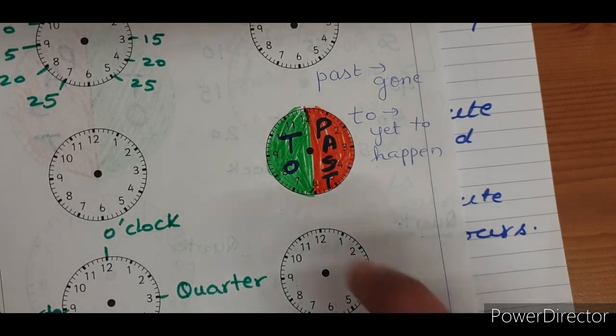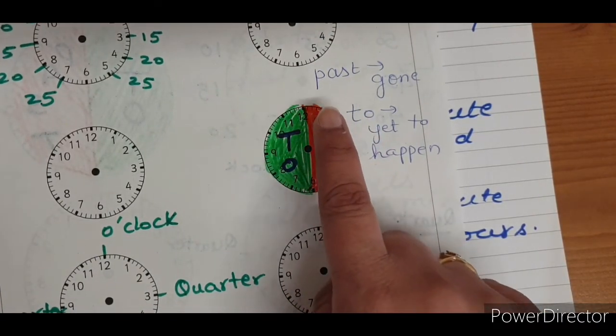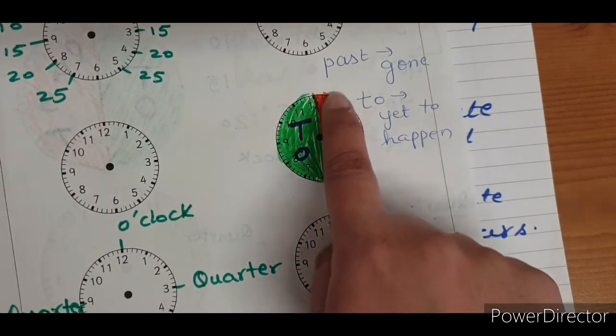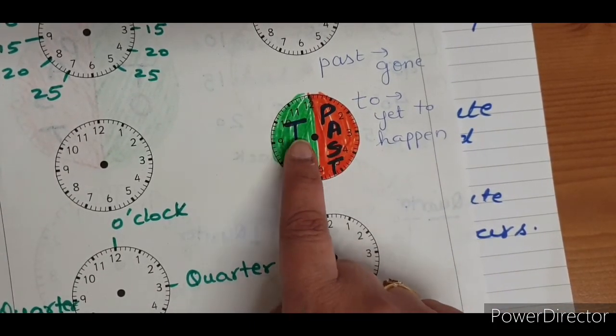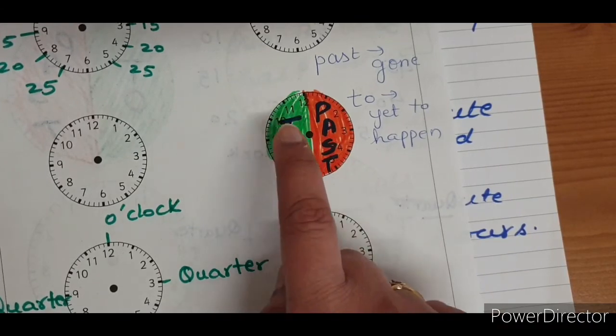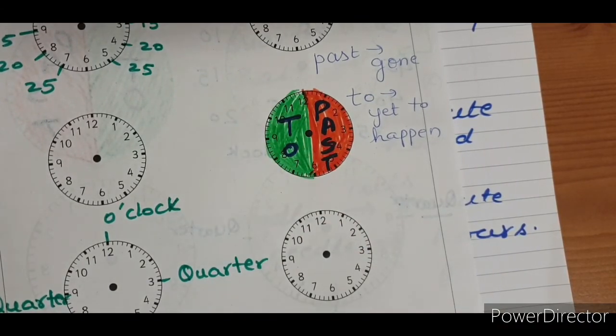And for the minute position, when it is on this half, we use past. And when the minute hand is on this half, we use to.